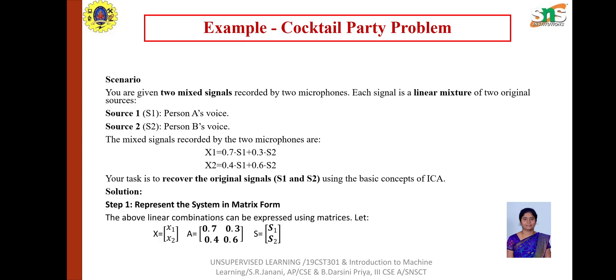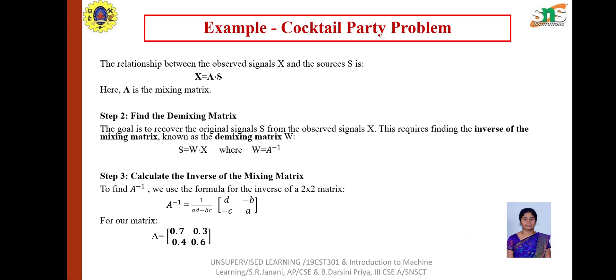Step 1 is to represent the system in matrix form where X = [X1, X2], A is the mixing matrix, and S is the source matrix. The relationship between observed signals and sources is X = A·S, where A stands for mixing matrix. In the next step, we find the demixing matrix.